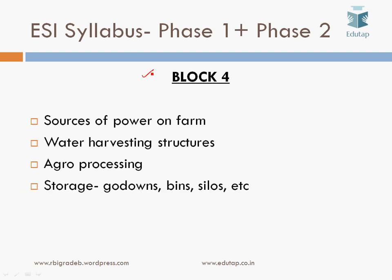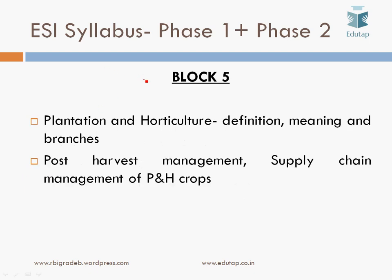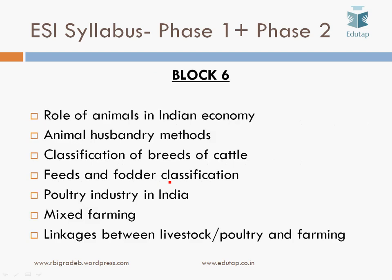Block 4 covers sources of power on the farm, water harvesting structures, agro-processing, storage — including godowns, bins, and silos. Block 5 is on plantation and horticulture — its definition, meaning and branches, post-harvest management, and supply chain management of plantation and horticulture crops. Block 6 covers the role of animals in the Indian economy, animal husbandry methods, classification of breeds of cattle, fodder classification, the poultry industry in India, and the concept of mixed farming and linkages between livestock, poultry, and farming.